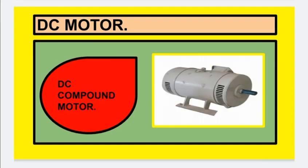Next is the DC compound motor. In this DC compound motor, the armature winding is connected both in series as well as in parallel to the field winding, which is why its name is compound motor.